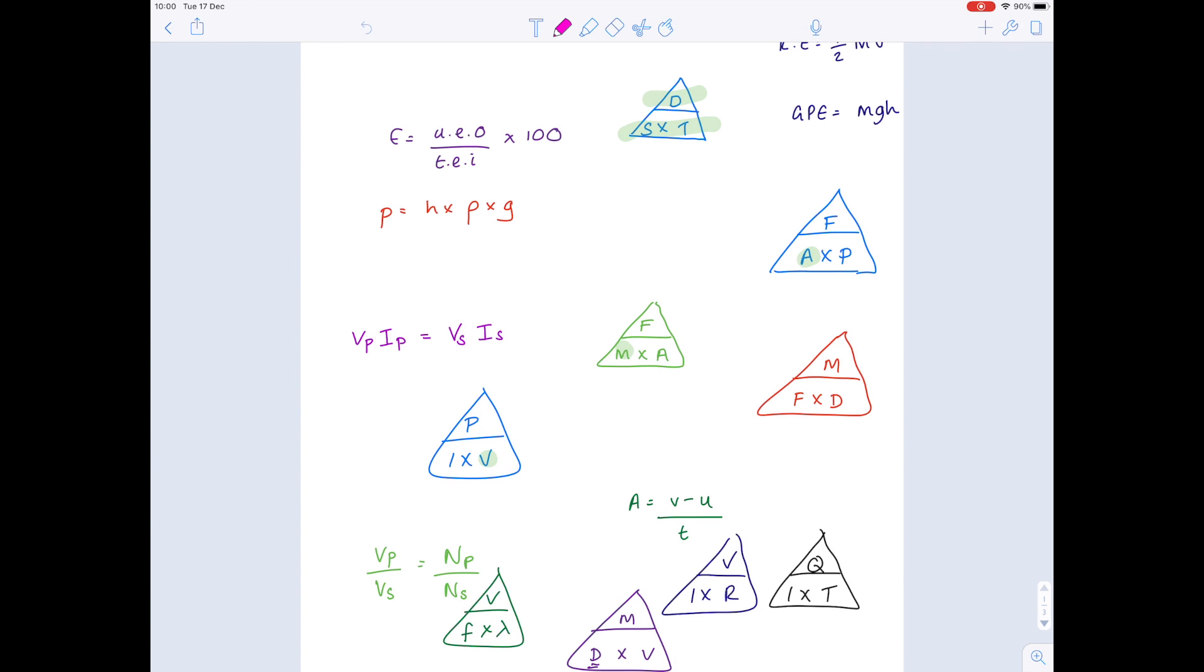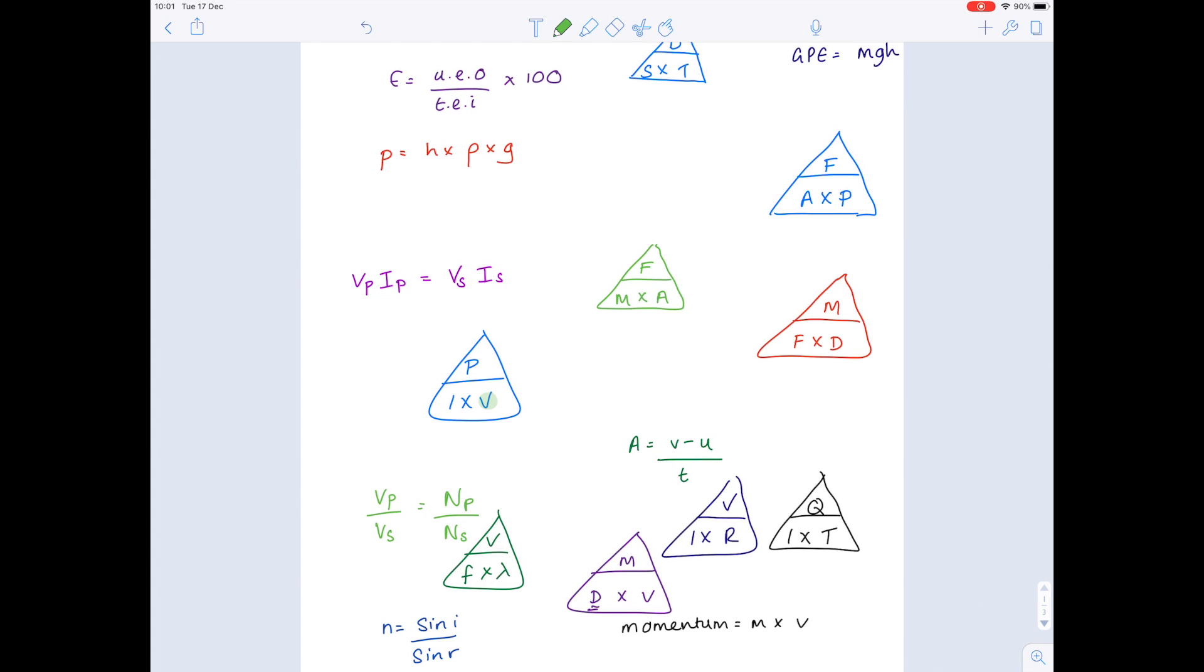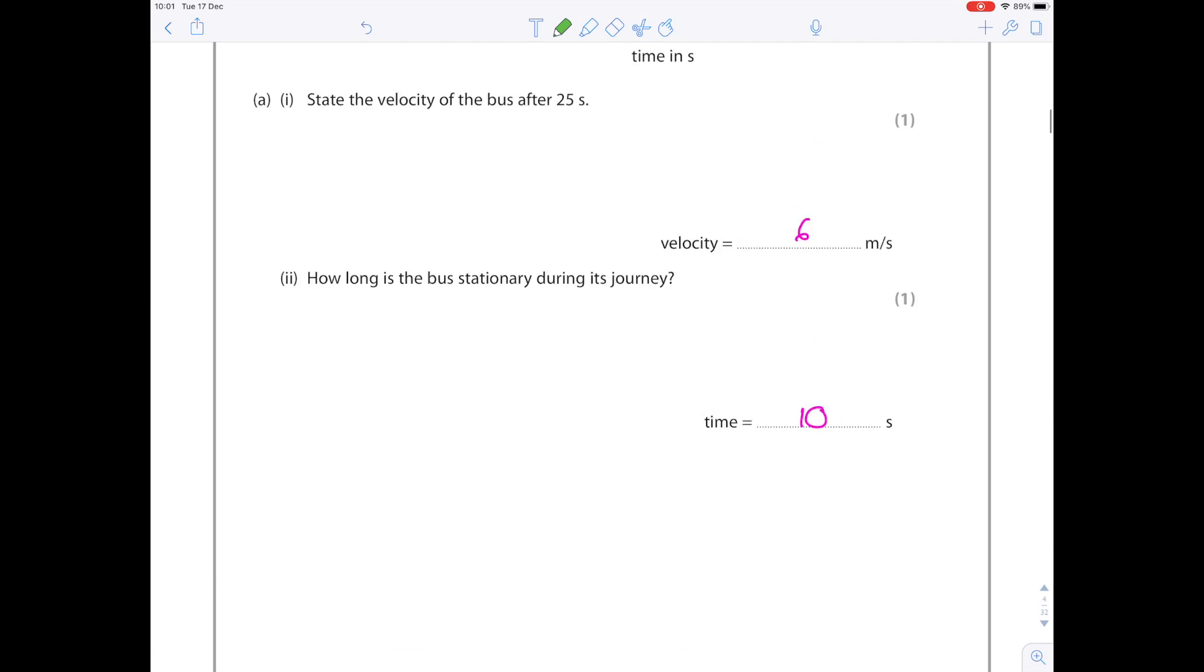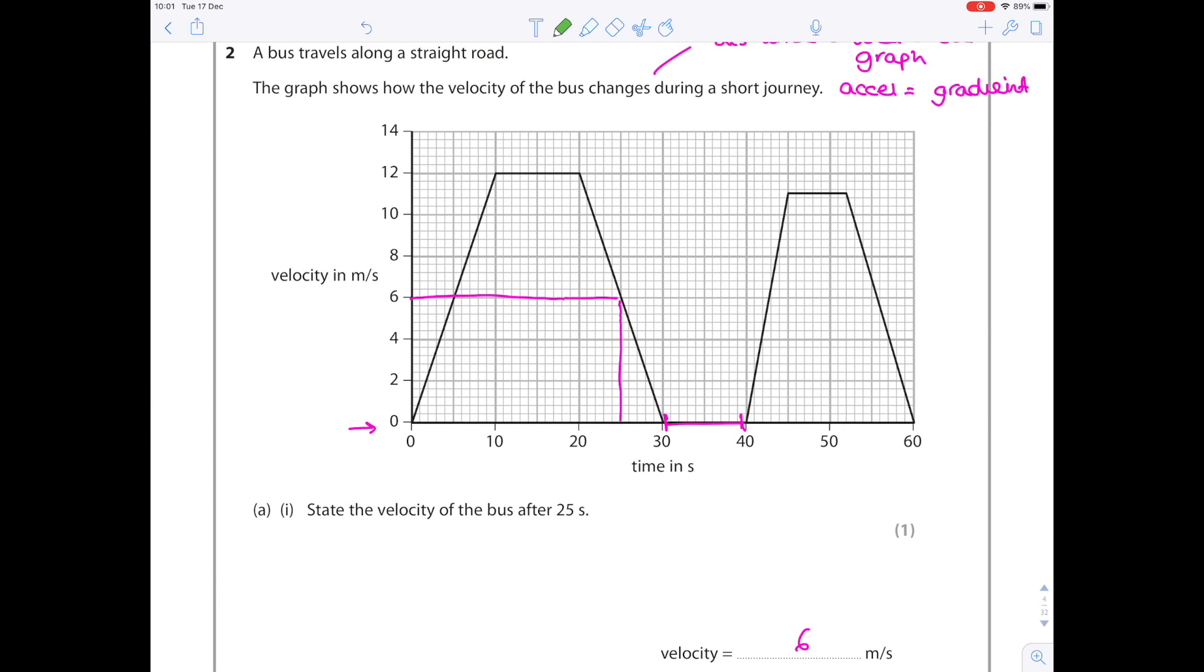State the equation linking acceleration, change in velocity, and time taken. Looking through my various equations, I can see that it's this one. It's up to you how you write the equations, whether you use symbols or write them out in full. Calculate the acceleration of the bus during the first 10 seconds and give the unit.